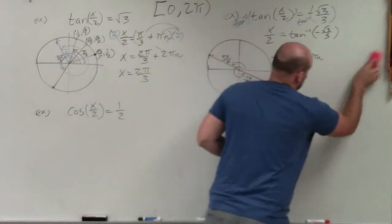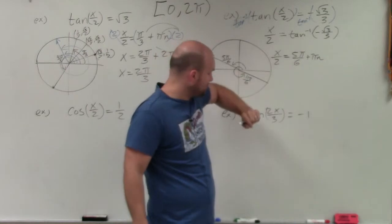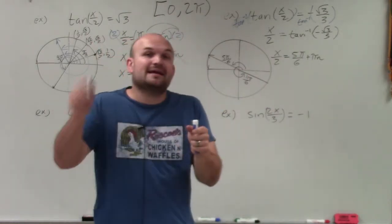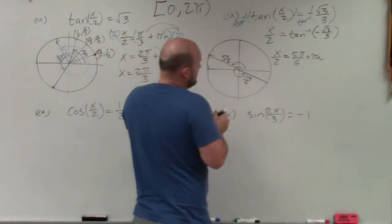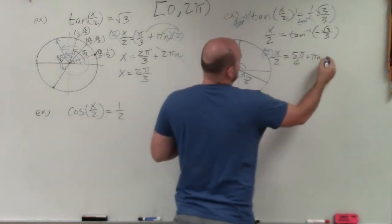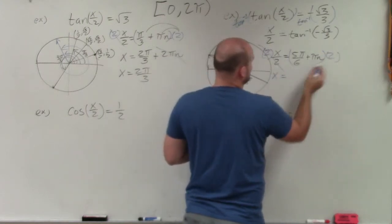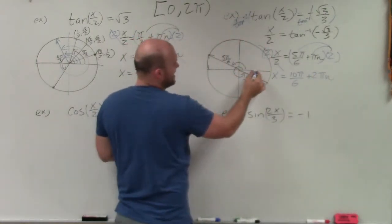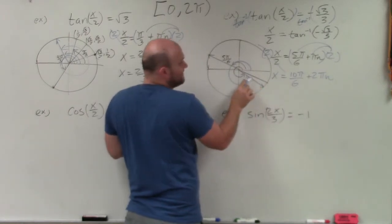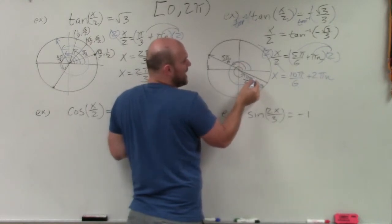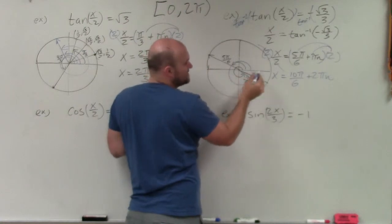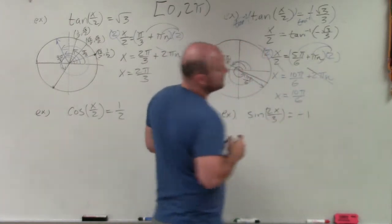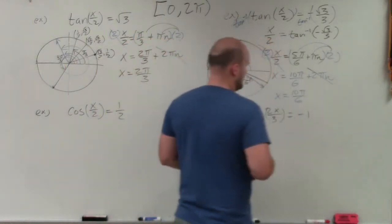Now I solve for x by multiplying both sides by 2, making sure to use parentheses and apply the distributive property. That gives x = 10π/6 + 2πn. Checking the constraint: 10π/6 is within 0 to 2π. Adding 2π would put me outside the range. So I can't add another angle and stay within 0 and 2π. My final answer is x = 10π/6, which reduces to 5π/3.